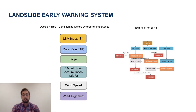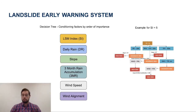In order to develop this system, we built a decision tree with the following conditioning factors in order of importance. On the left side, we can see our decision tree, in this case for the landslide susceptibility index being equal to 5.